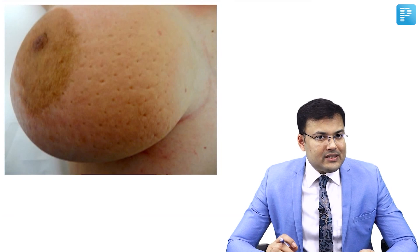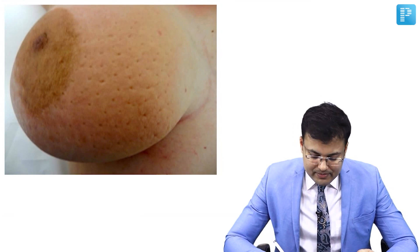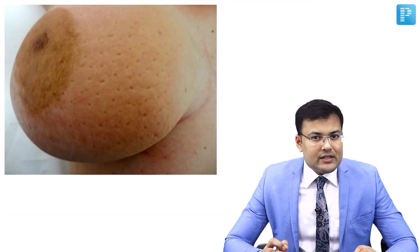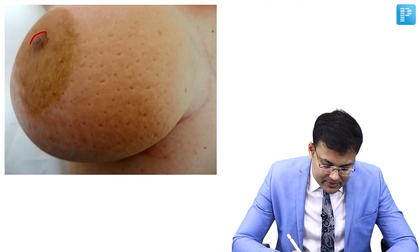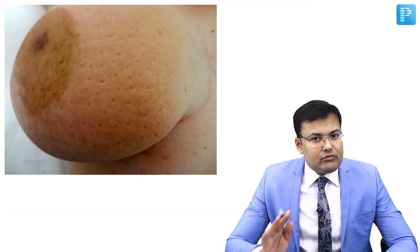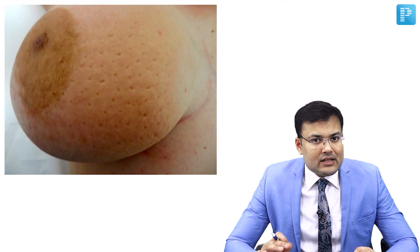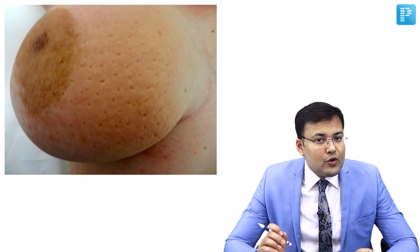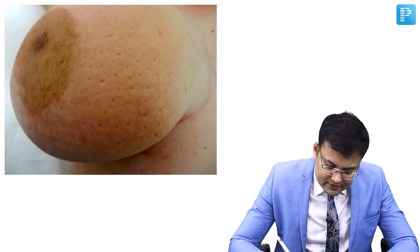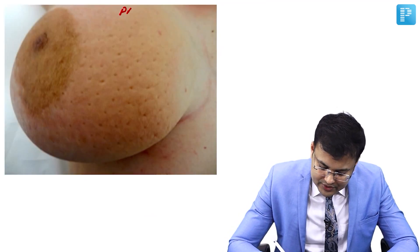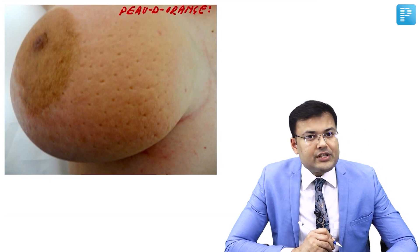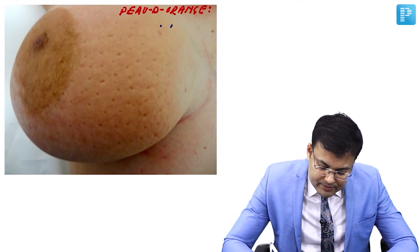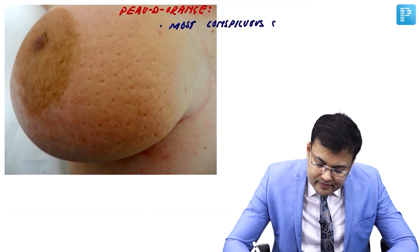Here the breast is having an orange peel appearance. You can see depressions and there is cutaneous edema. This is known as peau d'orange. Simultaneously, the nipple also appears retracted. This was a question asked in AIIMS — what is the most conspicuous sign of breast cancer? It is peau d'orange, which is the most conspicuous sign of breast cancer.